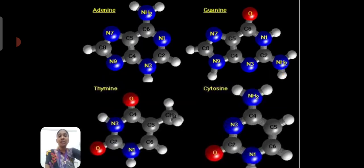Next one, we will see about molecular structure of nitrogenous bases. The first one is adenine. Second one is guanine. Third one is thymine. Fourth one is cytosine.